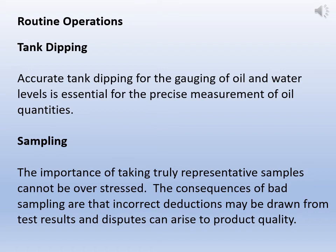Some of the major routine operations in the tank farm area: first is tank dipping. Accurate tank dipping for gauging oil and water levels is essential for the precise measurement of oil quantities. It is a daily operation, sometimes performed twice per shift. It is a manual operation even though an automatic level measuring system is available in each tank. Operators go manually to take the tank level reading, and accurate reading is required for accurate calculation of oil quantities.